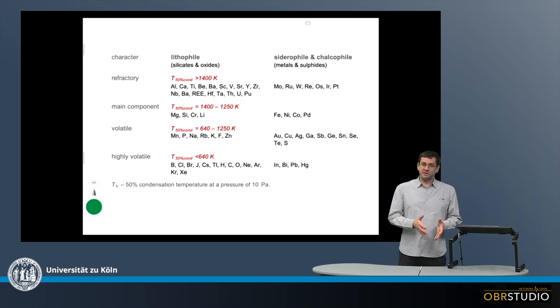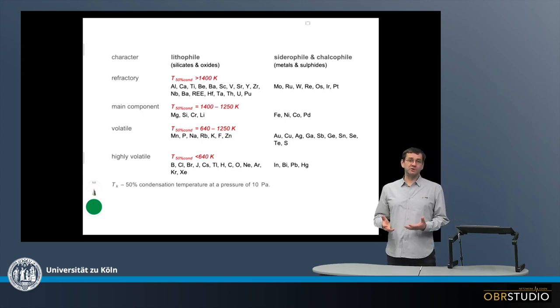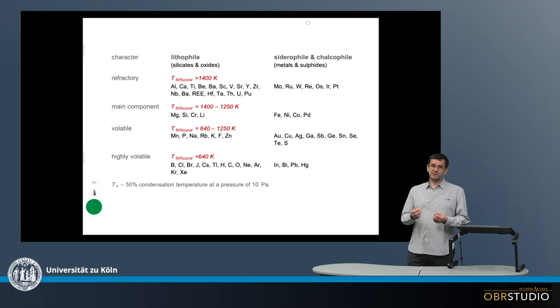To interpret the chemical compositions of meteorites and minerals, it is imperative to know something about the characteristics of the individual elements that occur in these meteorites and minerals.